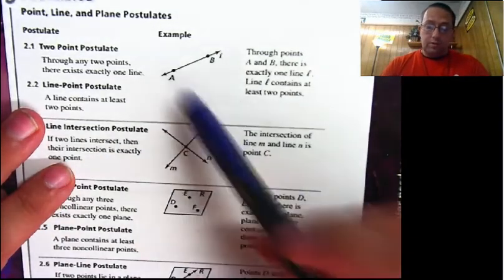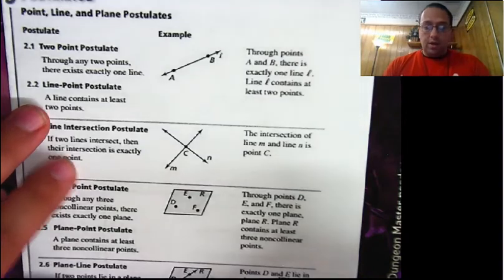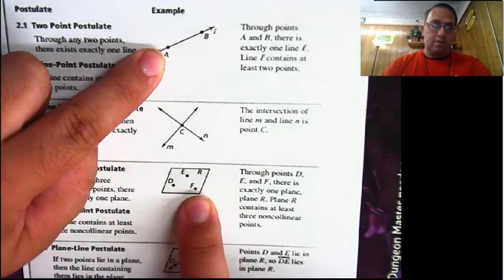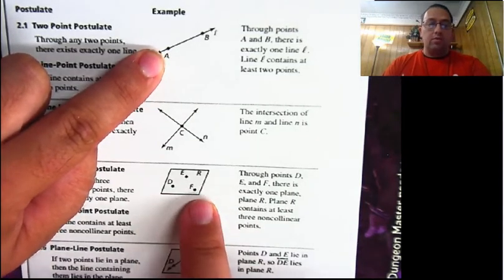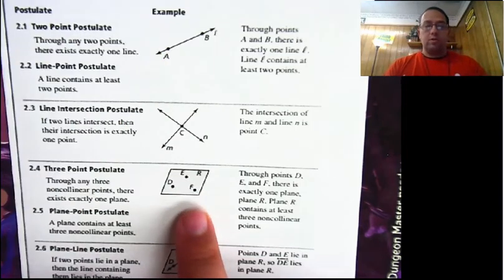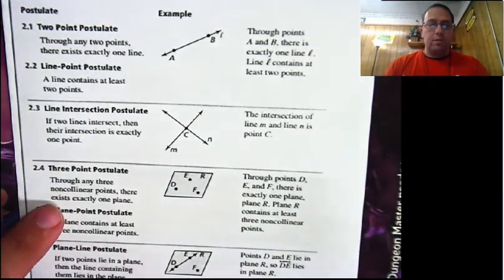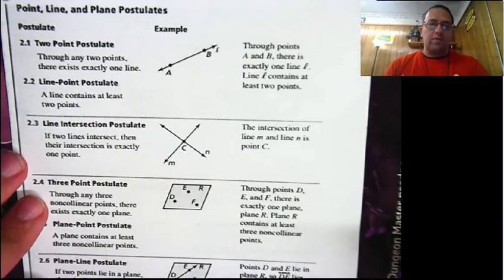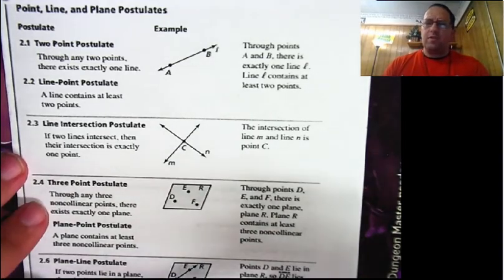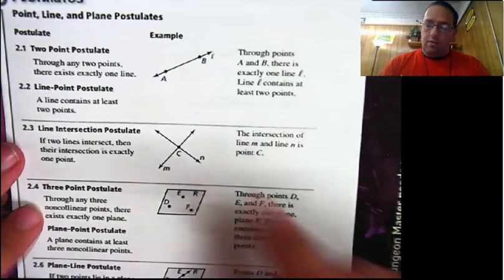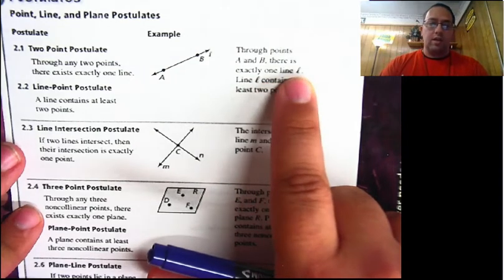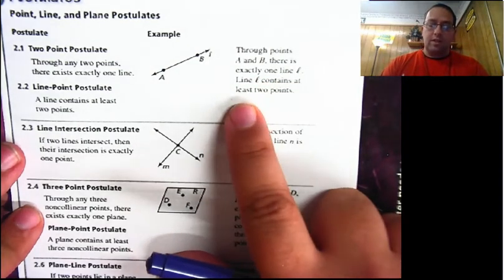Through any two points — so not only is there a line through point A and point B, there is also a line through point A and point F, or D or E. I could draw one line through those two points and only one line through those two points. Then we have the line-point postulate, which says a line contains at least two points. Considering the definition of a line says that it is infinite, it has an infinite number of points, so it's pretty obvious it's going to have at least two. Through points A and B, there exists exactly one line, which is line L. And line L contains at least two points.